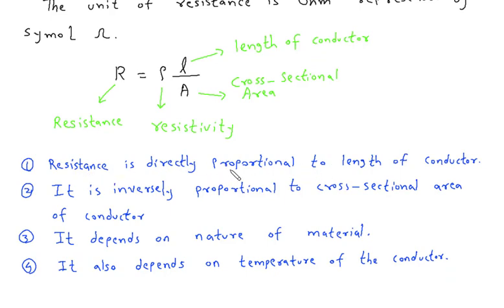Resistance is directly proportional to length of conductor means as the length of conductor increases, resistance increases. It is inversely proportional to cross sectional area of conductor means as area of conductor increases, resistance decreases.